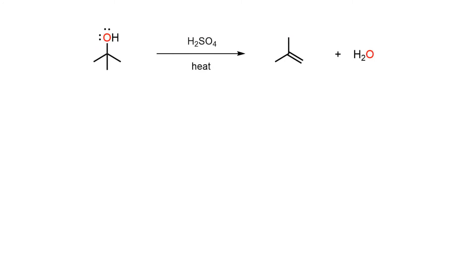When a tertiary or secondary alcohol is heated with a powerful acid such as sulfuric acid or phosphoric acid, an alkene is produced through a mechanism called the E1. Here is an example in which tertiary butyl alcohol is heated with sulfuric acid to produce 2-methylpropene and a molecule of water.